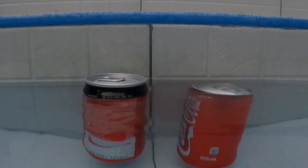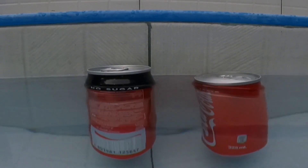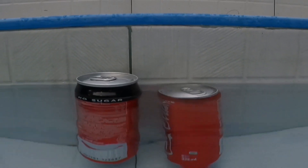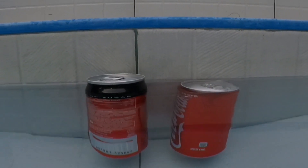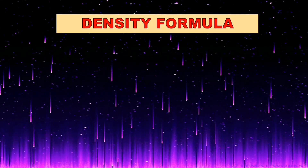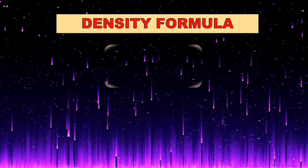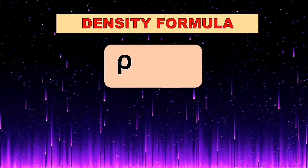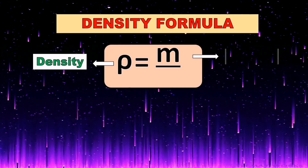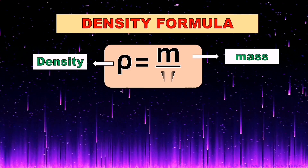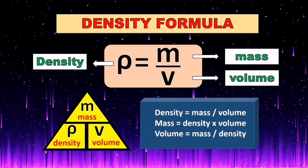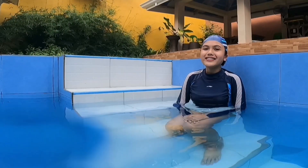The regular Coke, on the other hand, is sweetened with sugar, causing it to become more dense in water — that's why it sinks. Density is the mass of a substance per unit volume. To calculate density, we need to use the formula: density is equal to mass over volume.